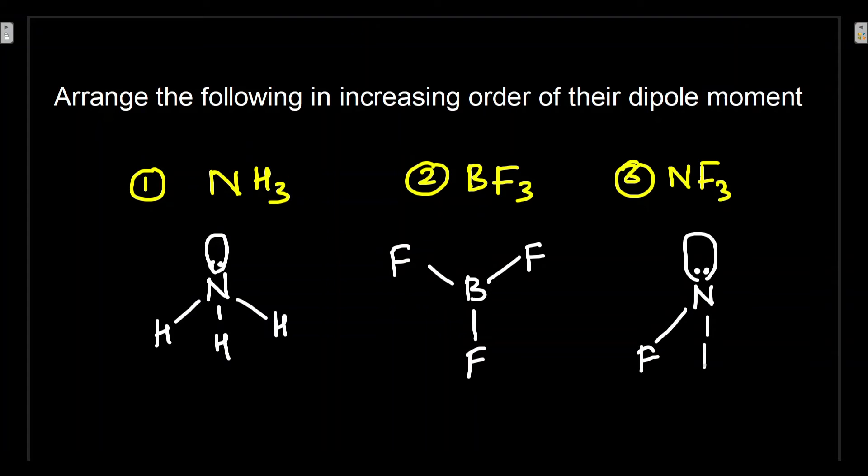You'll also have again the pyramidal shape. Now we have to take into account, first I will take the BF3. Here fluorine is more electronegative, it will pull the electrons this side. So we represent it by this kind of arrow—the arrow goes towards negative.